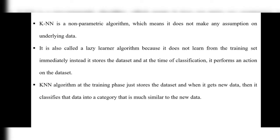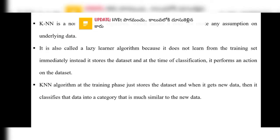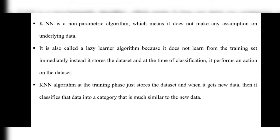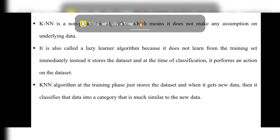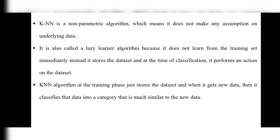KNN is a non-parametric algorithm, which means it does not make any assumption on the underlying data. It is also called a lazy learner algorithm because it doesn't learn from the training set immediately. Instead, it stores the data, and at the time of classification it performs an action on the dataset.